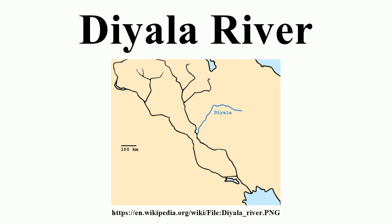History: The river is mentioned in Herodotus' Histories under the name Gynes, where it is stated that King Cyrus the Great dispersed it by digging 360 channels as punishment after a sacred white horse perished there. The river returned to its former proportions after the channels disappeared under the sand.